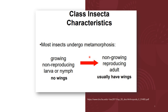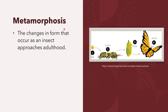Most insects undergo metamorphosis. When we say metamorphosis, that includes a growing, non-reproducing larva or nymph which has no wings, which later develops into a non-growing, reproducing adult that usually has wings. We define metamorphosis as the changes in form that occur as an insect approaches adulthood.